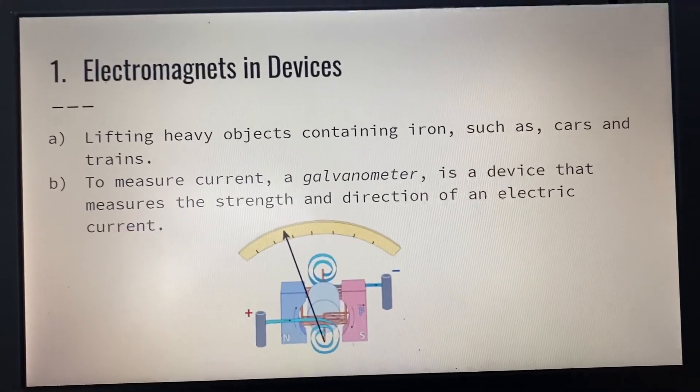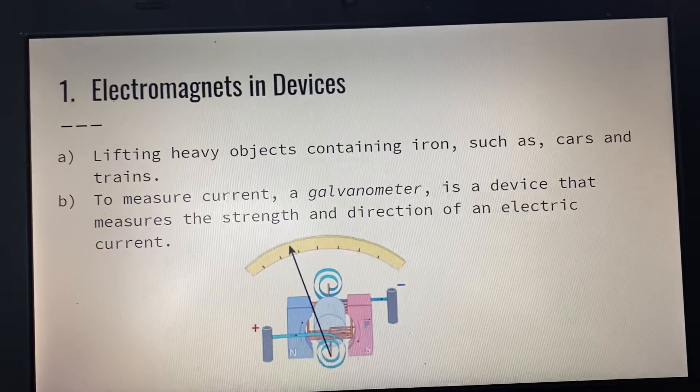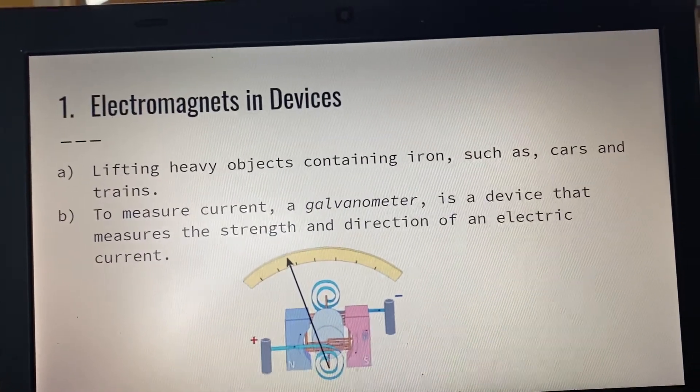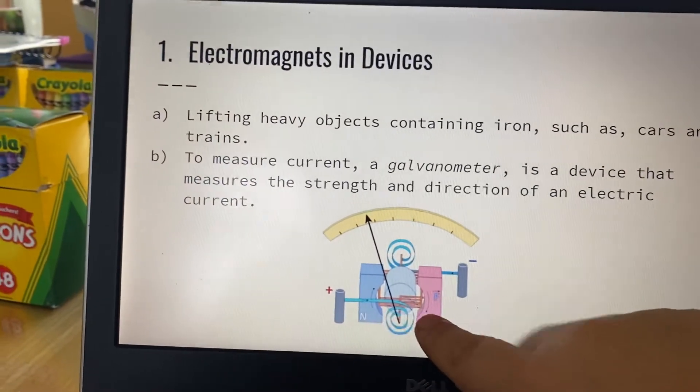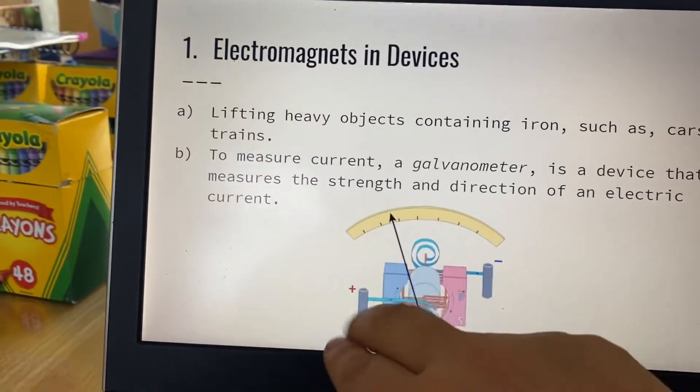In order to measure an electric current, you use a galvanometer. It is a device that measures the strength and direction of the electric current, and it looks just like this. So you have the north and the south, and in between, it will measure that current.